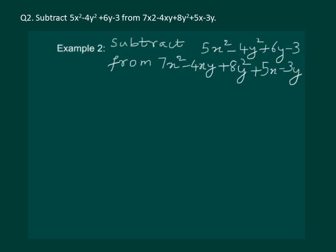Let us first try to understand this question. We have to subtract 5x squared minus 4y squared plus 6y minus 3 from 7x squared minus 4xy plus 8y squared plus 5x minus 3y. We can detect that we will have to change the signs of the second term, and we can also identify the like terms: x squared terms, y squared terms, and y terms.